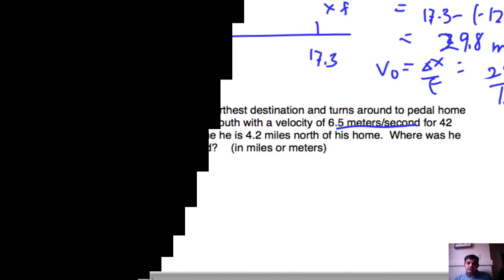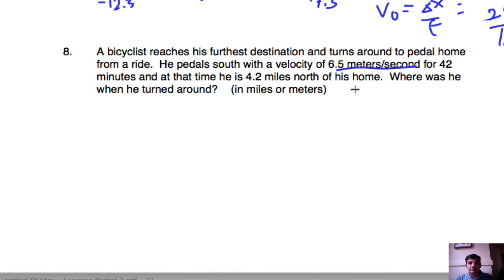Great. All right. So just when I lost hope of problems being simple, I realized this one's a little trickier. So first, let's go ahead. I'm going to actually label a couple things here. So I know that this is time, and I know that this is velocity. This might be x or x final. I'm not sure what it is, so I'm just going to leave it as one of those and just try to draw a picture. So we say a bicyclist reaches his furthest destination and turns around to pedal home from a ride. He pedals south with a velocity of 6.5 meters per second for 42 minutes. And at that time, he's 4.2 miles north of home. Where was he when he turned around?